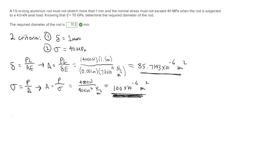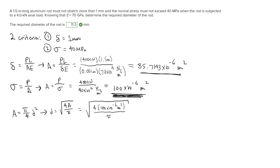Now solving for diameter using A = π/4·d², rearranged to d = √(4A/π). Plugging in A = 100×10⁻⁶ m², we get d = 0.01128 meters, which is 11.28 millimeters. That is our required diameter.